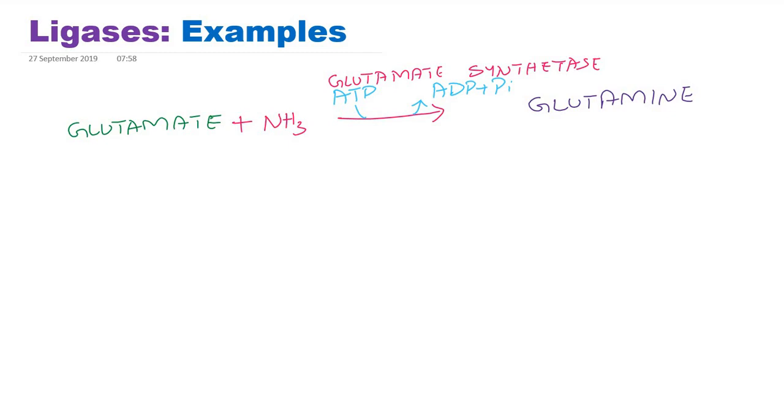The EC number for this - the common name is glutamate synthetase - is EC class 6, subclass 3, sub-subclass 1, and it is the second enzyme in this EC 6-3-1 series. The systematic name for this glutamate synthetase is glutamate ammonia ligase.